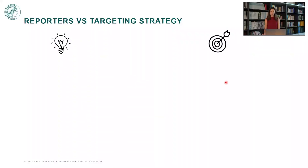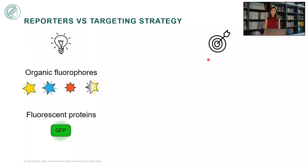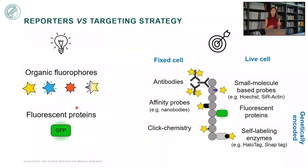When talking about multi-color imaging, it's important to distinguish two things: the reporters and the targeting strategy. By reporters, I mean the molecules we are ultimately visualizing with our microscopes, which can be organic fluorophores or fluorescent proteins. The targeting strategy, on the other hand, is the way in which we bring the fluorophore next to our structure of interest with very high specificity. By now there are several techniques and approaches that can be used — this is by no means a comprehensive list, but probably the most popular ones.